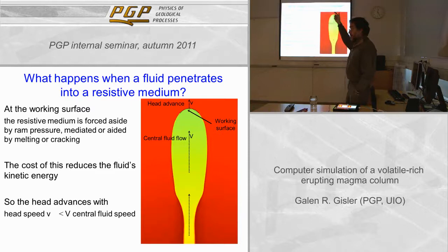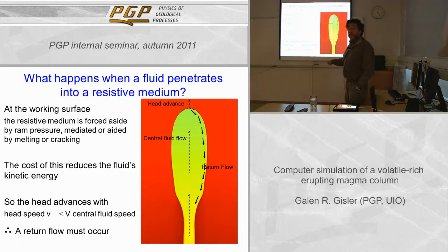That in turn implies there's always going to be a return flow. The return flow, as I picture it, will go around the sides — though it need not necessarily go around the sides; it could go down the middle of the column. But I think the most general and most difficult case is where it goes around the side.